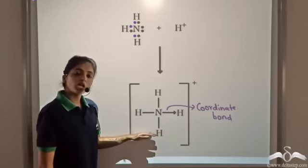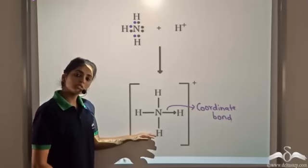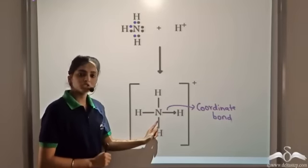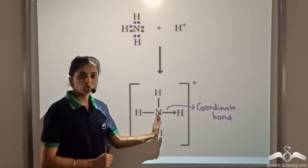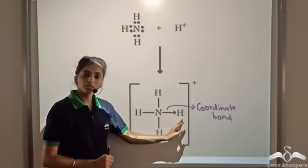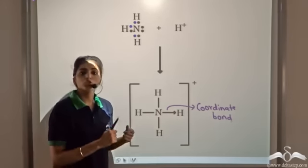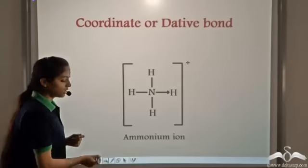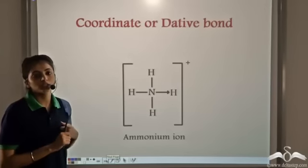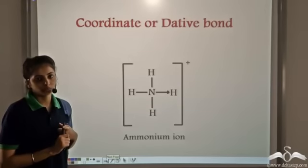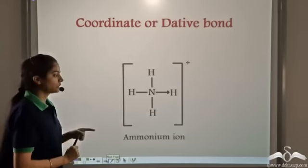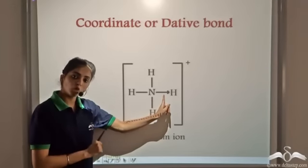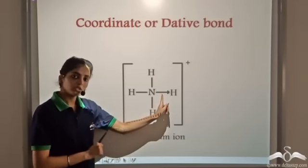Such type of compounds, in which one atom completely shares the lone pair of electrons with another atom which is short of one lone pair of electrons, is known as a coordinate or a dative compound. So in this case, this bond is a coordinate bond or a dative bond.